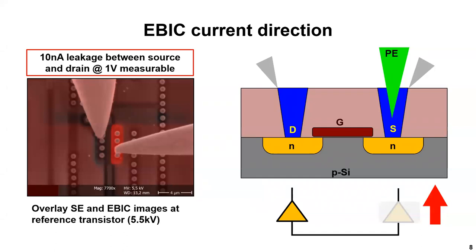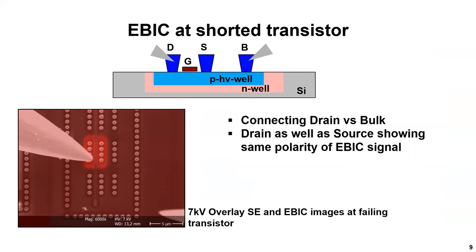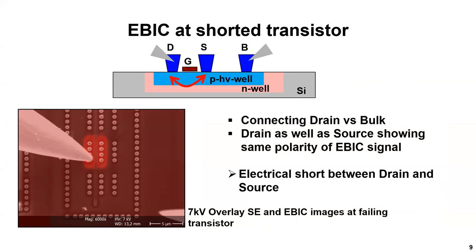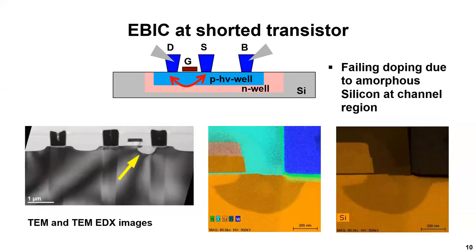By scanning the second junction we have the same situation, but now the current direction at the amplifier is from right to left. This was the case at the reference sample of our transistor under investigation. However, if we connect only one of the doped structures at the failing transistor, we can visualize both source and drain area. This is only possible if there is a short — in this case, a high-ohmic short between source and drain. The following TEM investigation shows a clear abnormal contrast at one side of the active transistor area. However, the material analysis shows only silicon in this area, identifying a region with amorphous silicon as the origin of the small leakage current between source and drain.